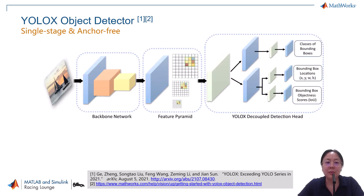If you are interested in how to design, train, and deploy a YOLO v2 network, check out the links to these two blog posts. In this demo, we are using YOLOX, the anchor-free version of YOLO introduced in 2021. Instead of relying on predefined anchor boxes, YOLOX directly predicts the center of each object, which makes the model smaller and faster.